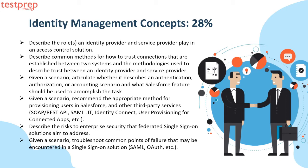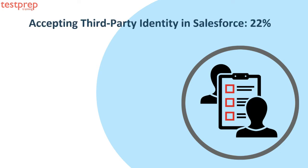Second, describe common methods for how trust connections are established between two systems and the methodologies used to describe trust between an identity provider and service provider. Third, given a scenario, articulate whether it describes an authentication, authorization, or accounting scenario and what Salesforce features should be used. Fourth, given a scenario, recommend the appropriate method for provisioning users in Salesforce and third-party services — SOAP or REST API, SAML, JIT, Identity Connect, user provisioning for connected apps, etc.